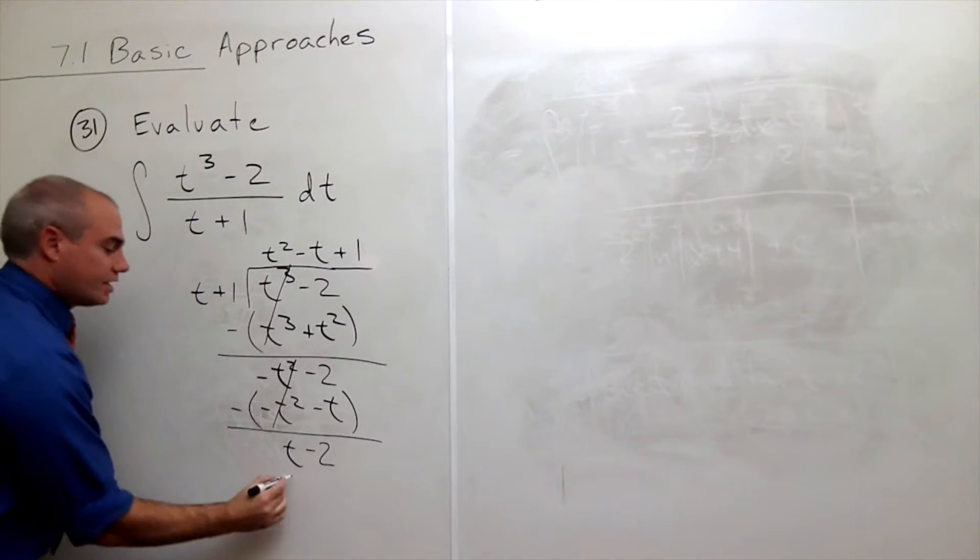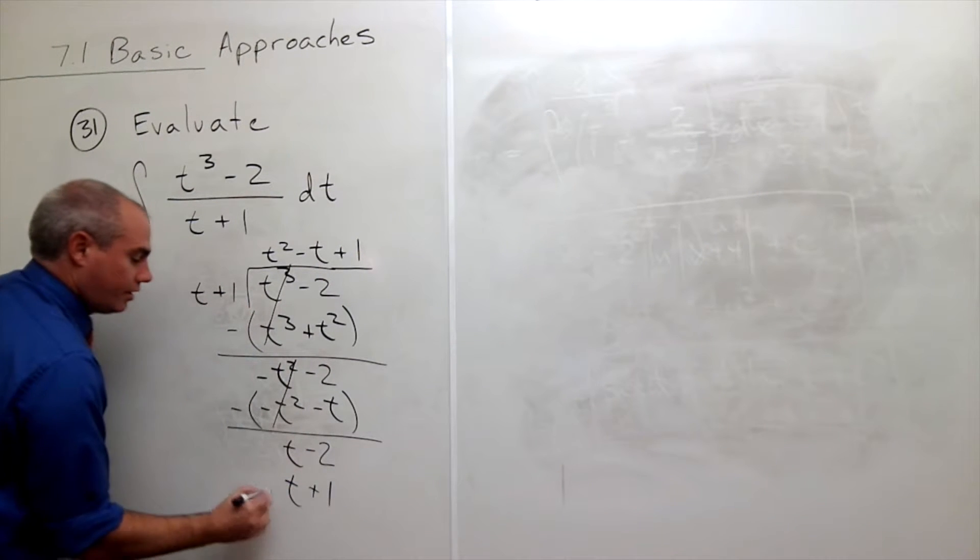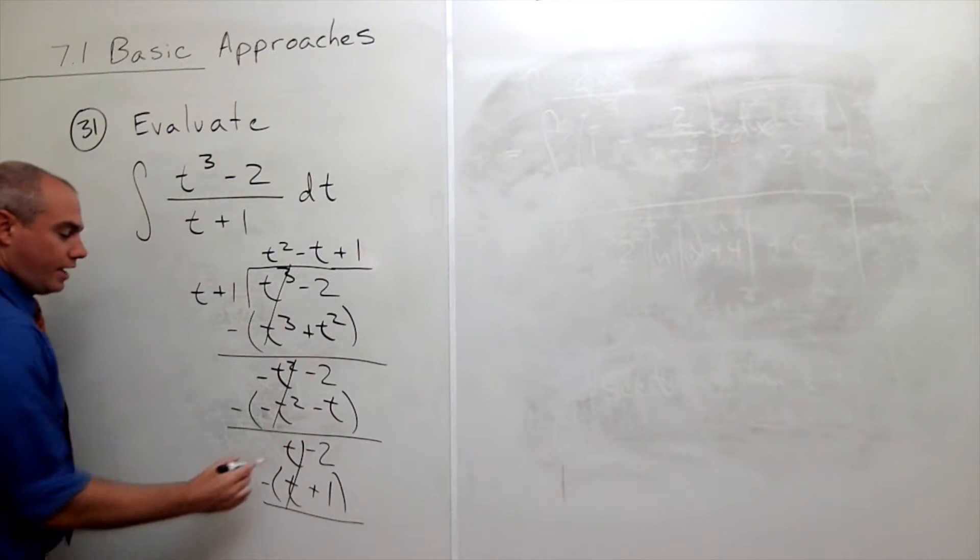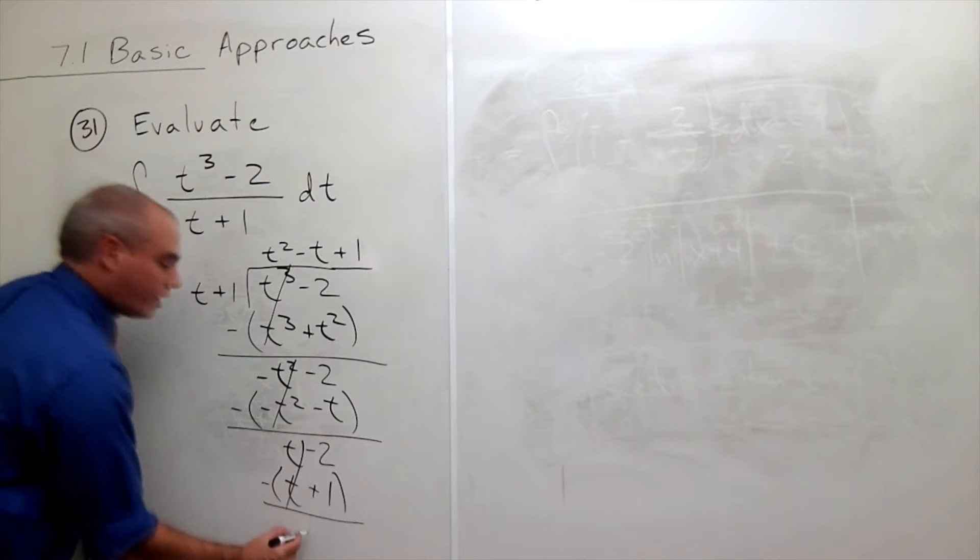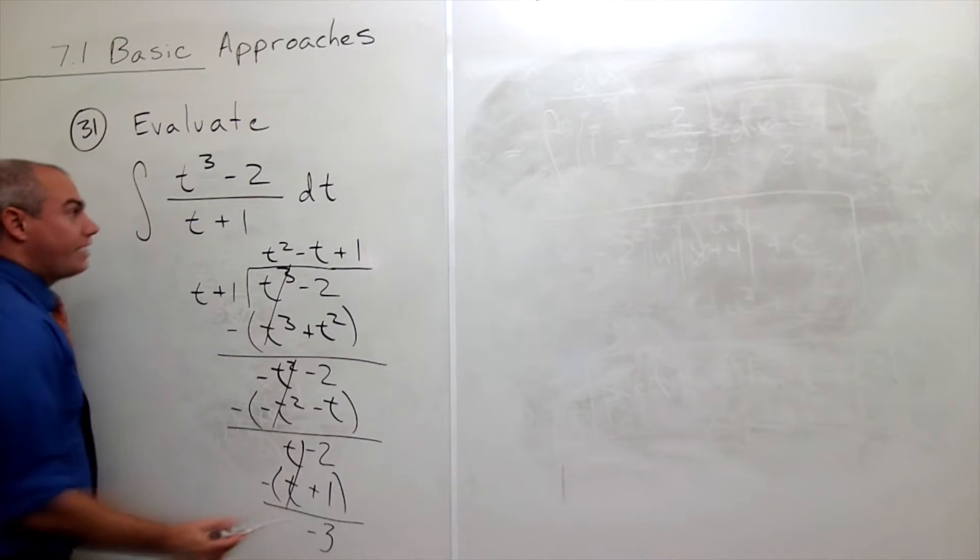And 1 times t is t. 1 times 1 is 1 and now I subtract that. The t's cancel and minus 2 minus 1 is minus 3. Okay. So this is my remainder.